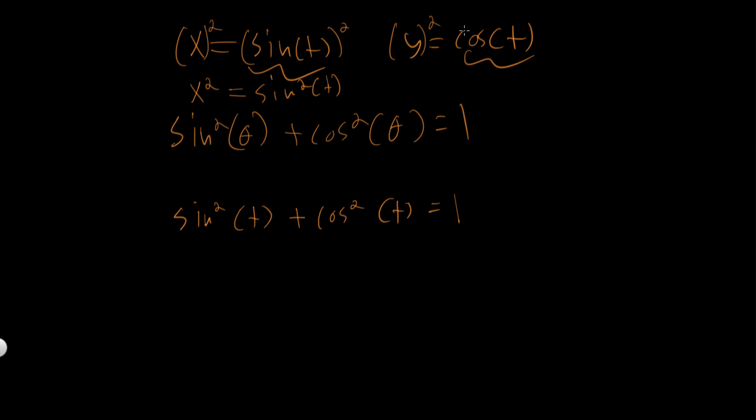So we know that y squared is equal to cosine squared of t. Now knowing this, let's do some substitution here. Let's plug in the values we know. We know sine squared of t is equal to x squared, so let's write x squared instead. And then we know that cosine squared of t is equal to y squared, and the summation of those two is 1.